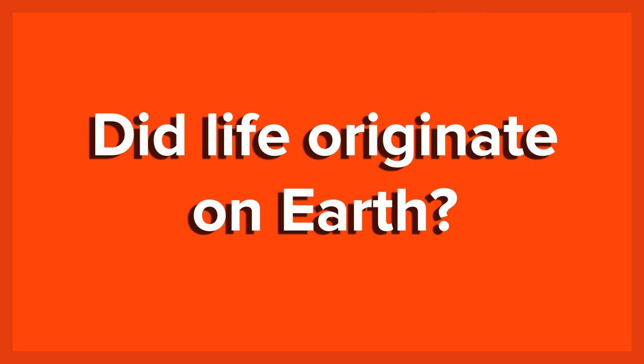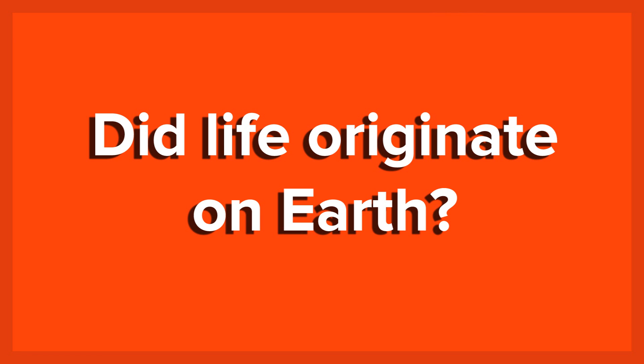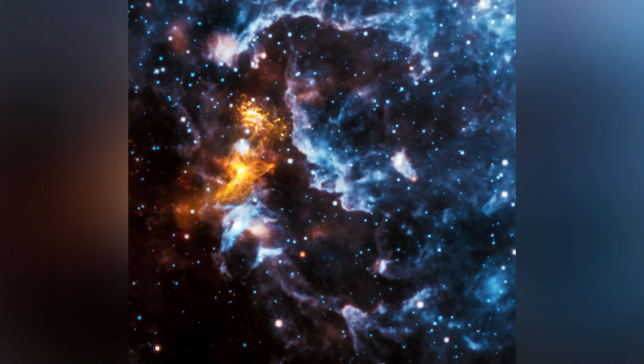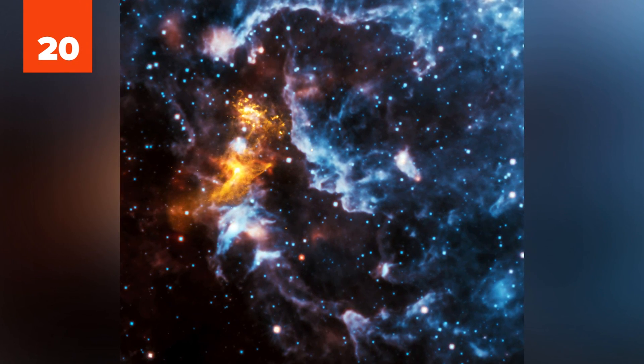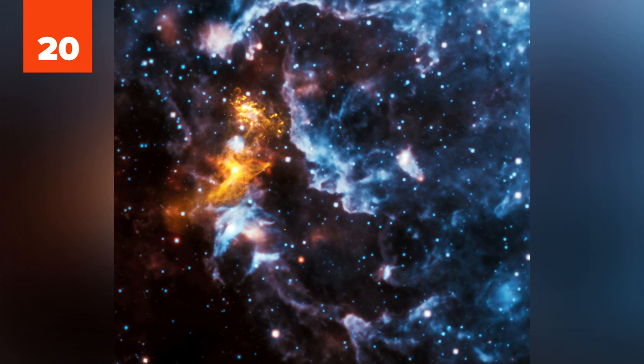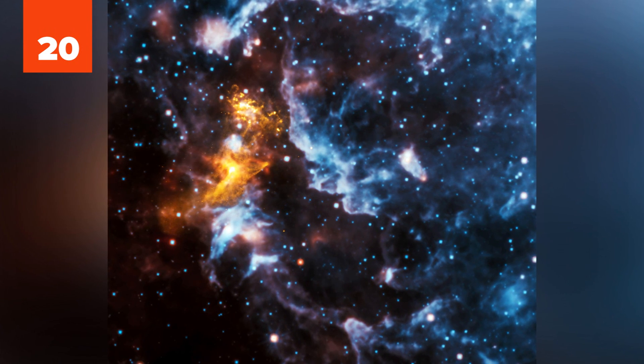Number 20: Did Life Originate on Earth? We know that Earth was devoid of life when our solar system was first formed. Life forms then appeared on our planet, eventually evolving into the species we know today.